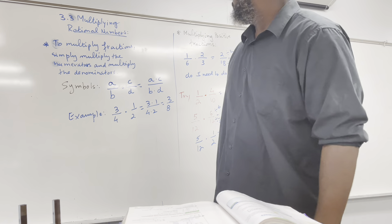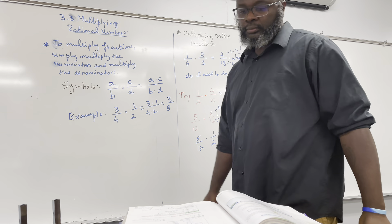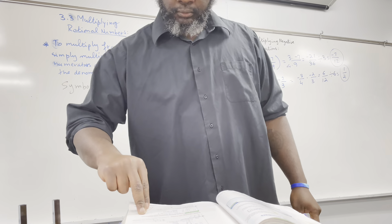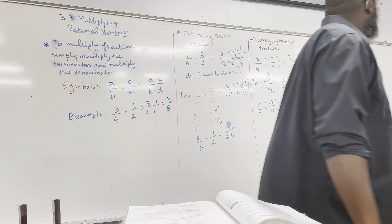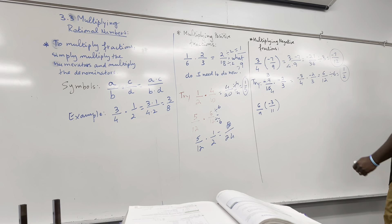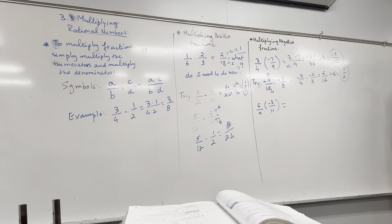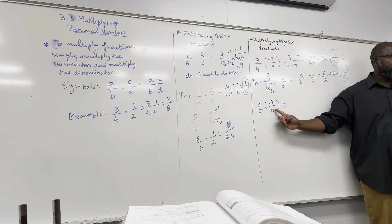Do I leave negative 21 over 36 like this? No — I need to simplify. What goes into 21 and 36? Three. You can check: two plus one is three, so 21 is divisible by three; three plus six is nine, so 36 is divisible by three. Divide by three: you get negative seven over 12. Don't forget the negative.